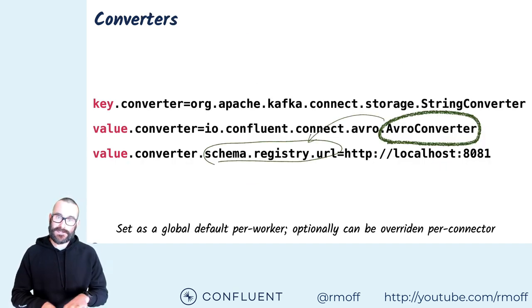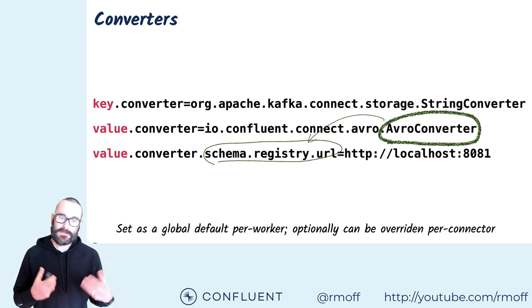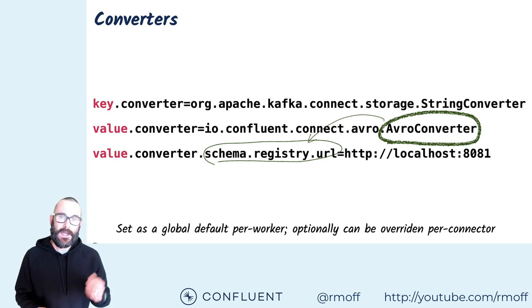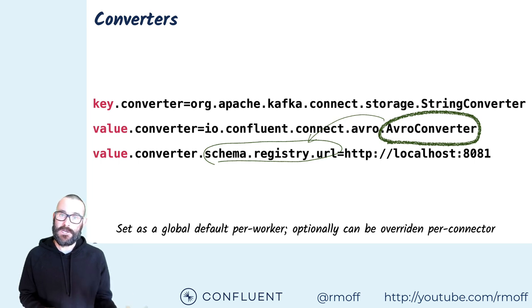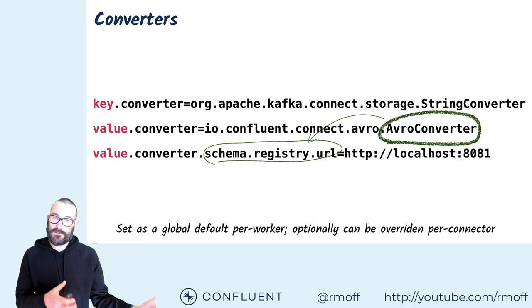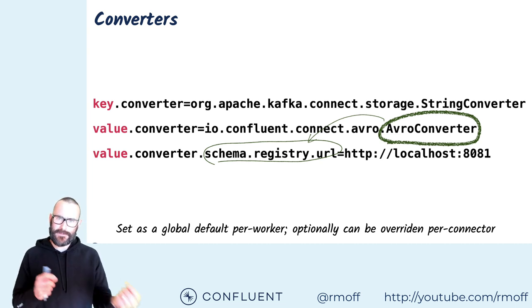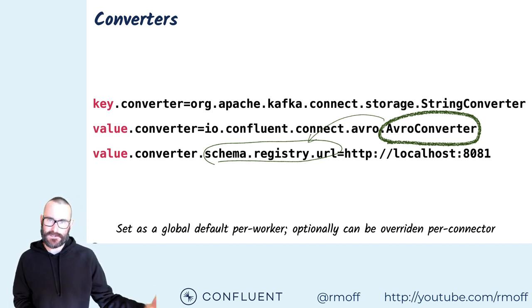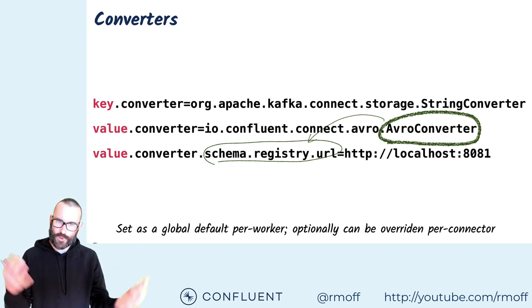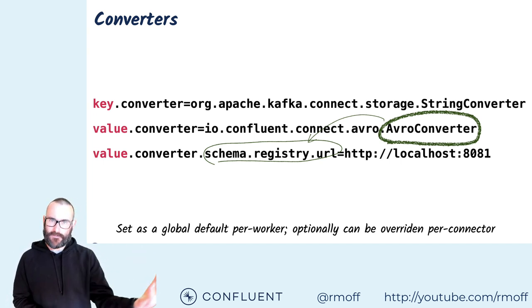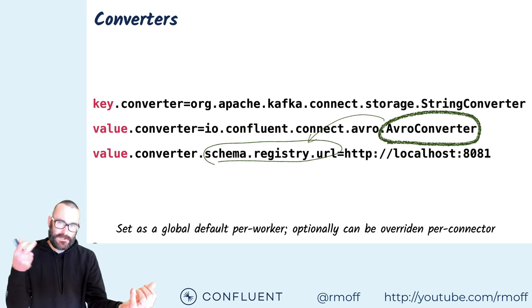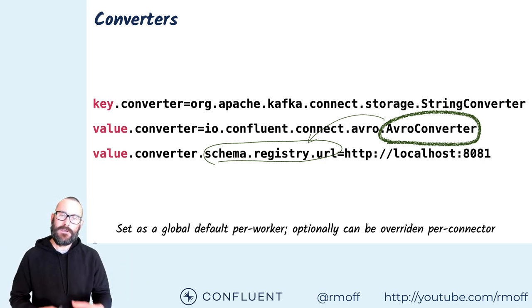You specify converters as a global configuration in the Kafka Connect worker. You specify: I would like to serialize the value for my message using this converter, and I'd like to serialize the key using this converter. Obviously you want to make sure that you match these up — you can't serialize using one method and deserialize using another. So if you're writing Avro onto the value, you need to read Avro from the value of the message.